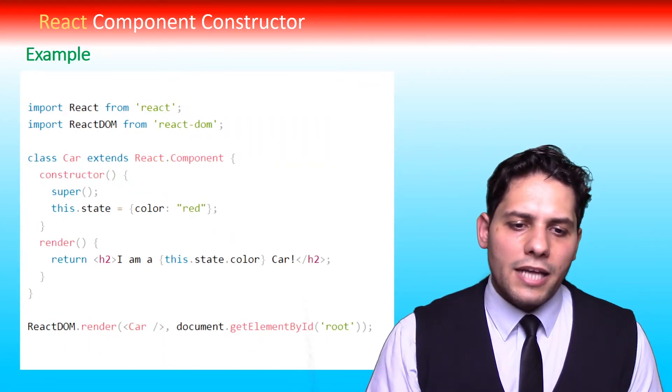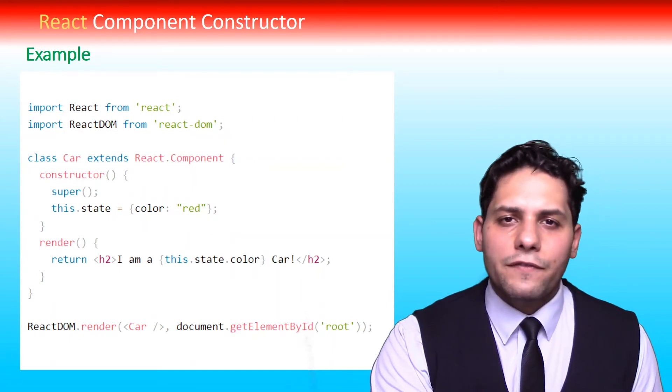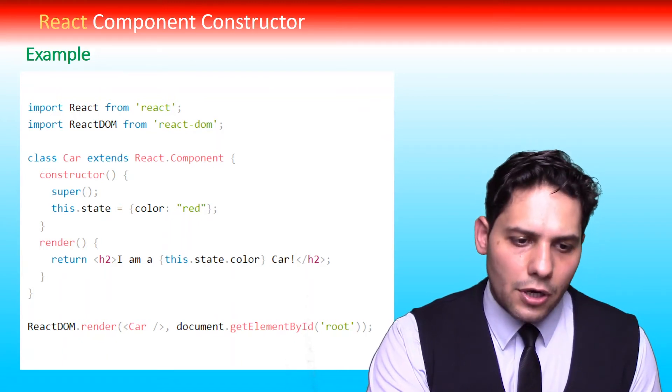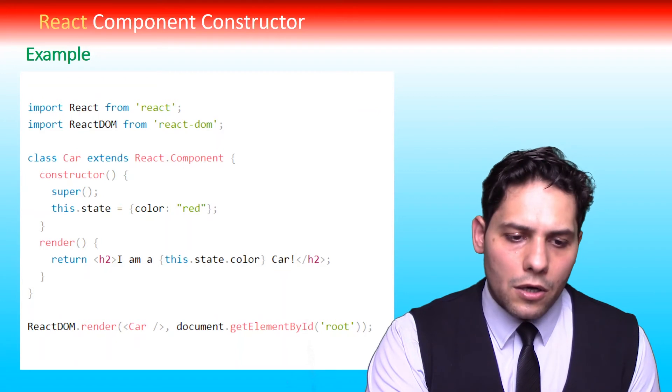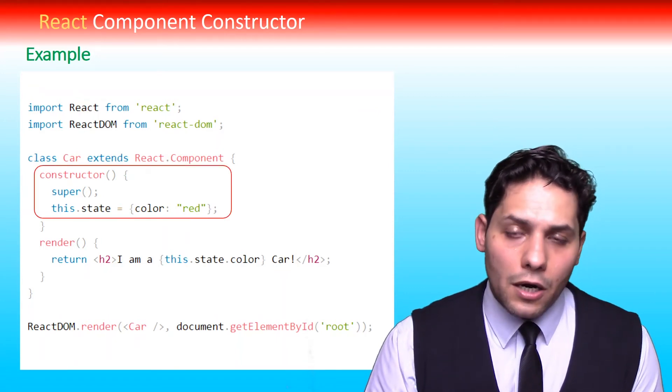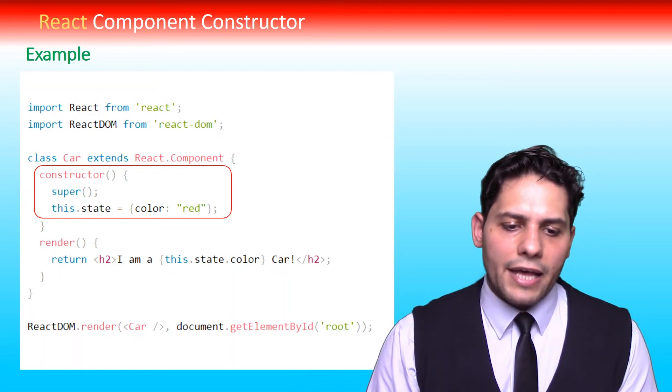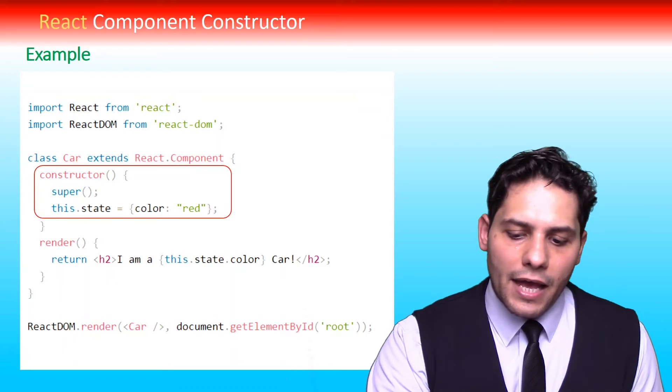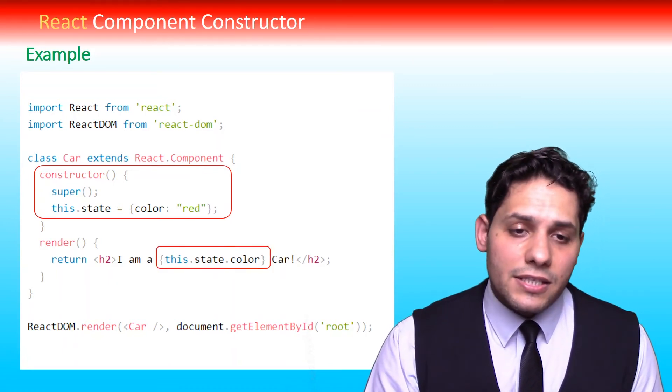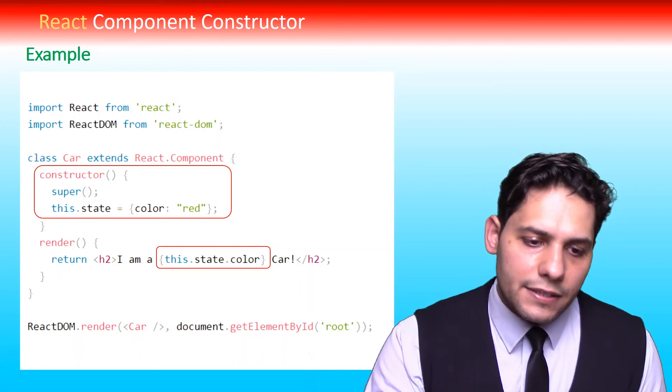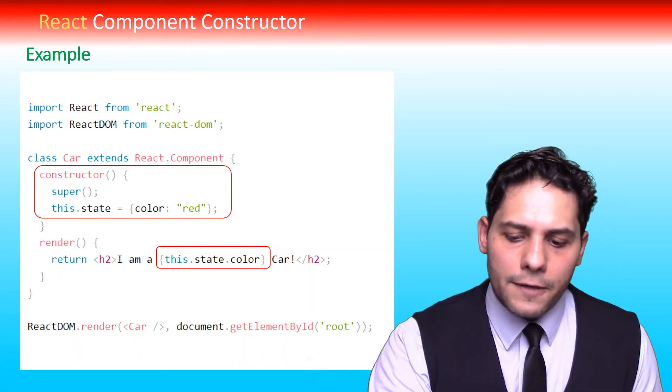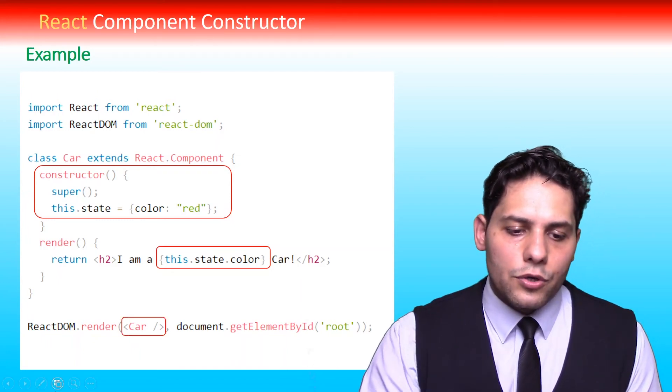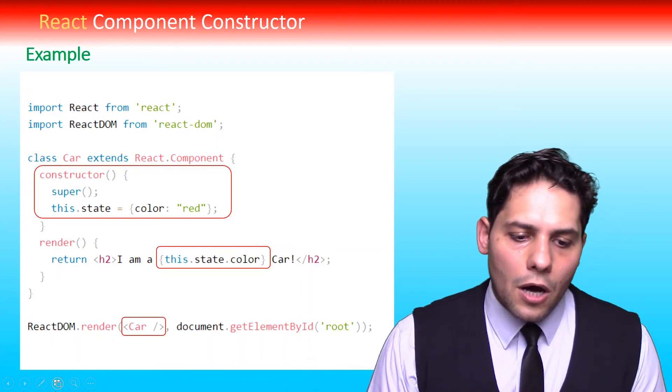As you can see, we have the whole code here. After importing React from react libraries and ReactDOM from react-dom, we defined our Car component. Here we defined our constructor with super function, and we added property of color to it in the state. Then we use this.state.color for using that Car component and constructor. Then we used this statement for using the whole component in our ReactDOM.